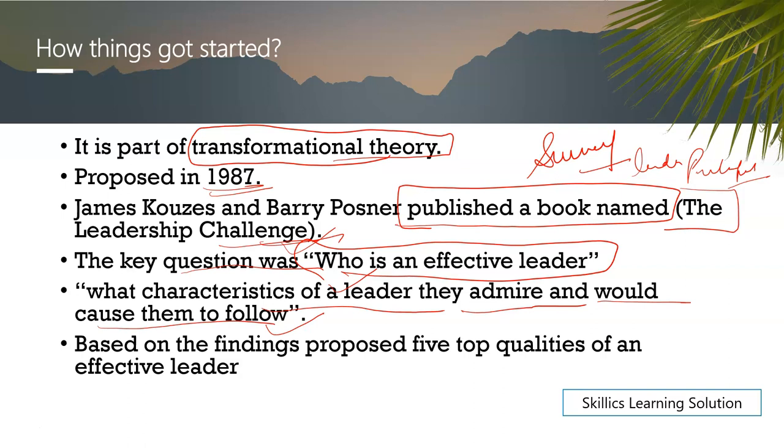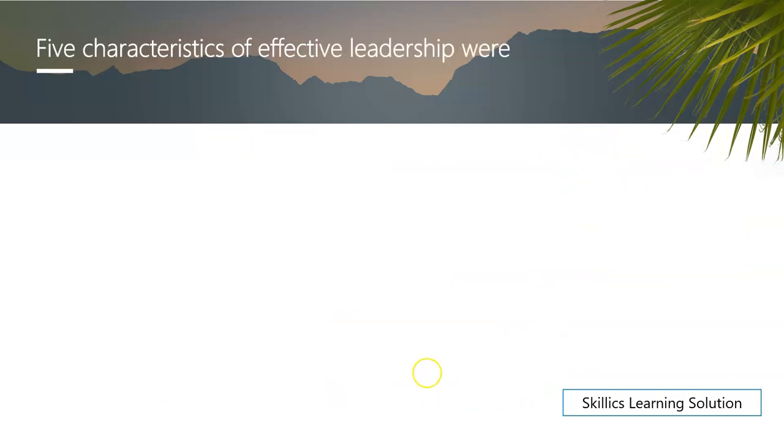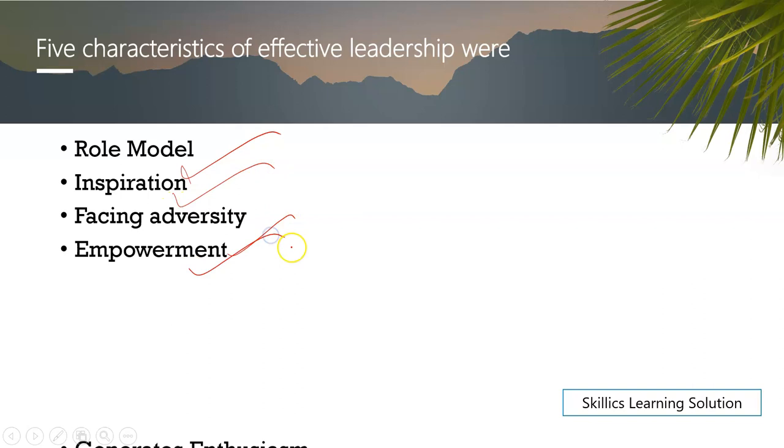They have released five qualities or five characteristics. The first characteristic was called role model. Second was called inspiration. Third was called facing adversity. Fourth was empowerment. Fifth was generates enthusiasm. These five things we'll talk about in detail.